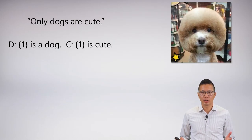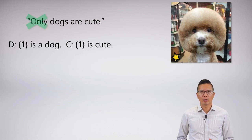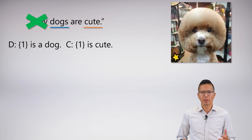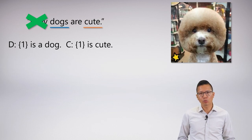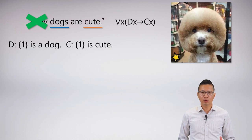How do we symbolize 'only dogs are cute'? We actually know the answer to this already. We know that we can just ignore the word 'only', and then just think: how do I symbolize 'dogs are cute'? Well, dogs is the group, cute is the property — no problem. For all x, dx arrow cx. Very straightforward.